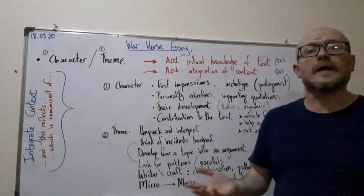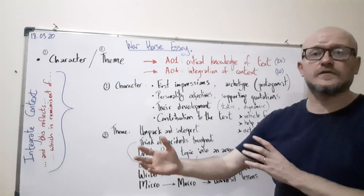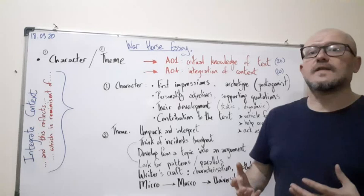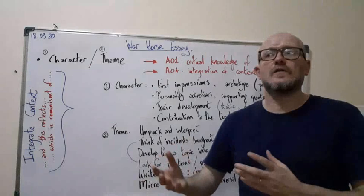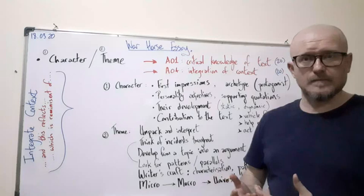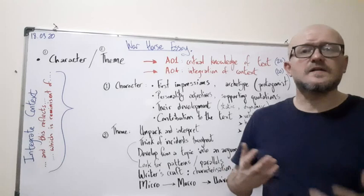Then you consider their development. Some characters are quite static, quite two-dimensional; they don't develop very much. Now, from chapter one to chapter four, you could say that about Albert's father, about Ted Narcott. However, later on, around chapter 18, chapter 19, we get to hear some redeeming features about him where he felt bad, he stopped drinking, he changed a lot, he was a lot more supportive toward mother, making jokes with Albert. So you get to hear some progression with this character.